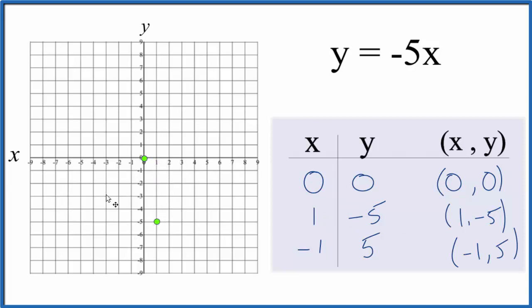We could stop there, but it's helpful to have three points to make sure these first two are correct. So we go to x is negative 1 and y is 5, and you can see those three points there.